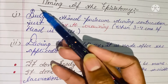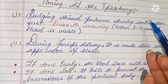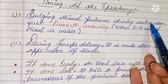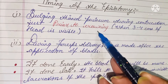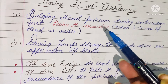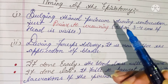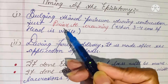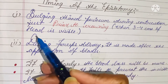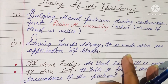Now moving to the timing of episiotomy — at what time and in which stage it should be conducted. It should be performed when the perineum is thinned during a contraction, just prior to crowning. Crowning is the stage when we can see the head of the fetus and it is not going back inside the uterus. Episiotomy should be conducted just before crowning takes place — when 3 to 4 centimeters of the head is visible.